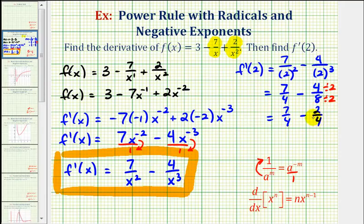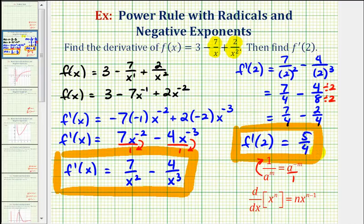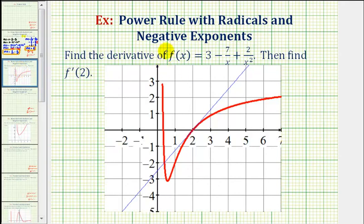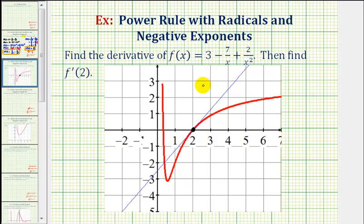7 fourths minus 2 fourths is 5 fourths, so f prime of 2 equals 5 fourths — the slope of the tangent line on the function when x equals 2. We can verify this graphically: the red graph is the original function, and at x equals 2 you're at a specific point on the function. The blue line is the tangent line, and its slope is f prime of 2, which equals 5 fourths.